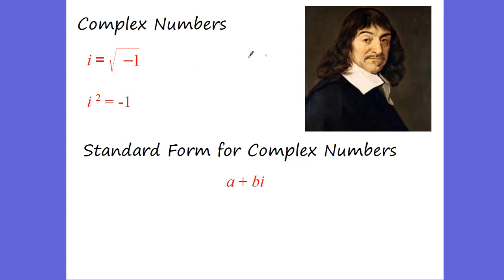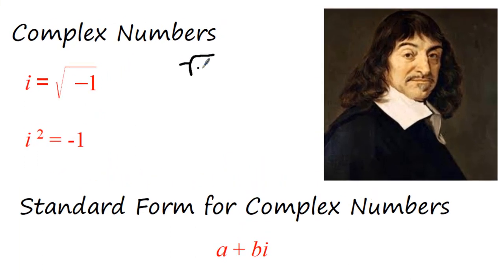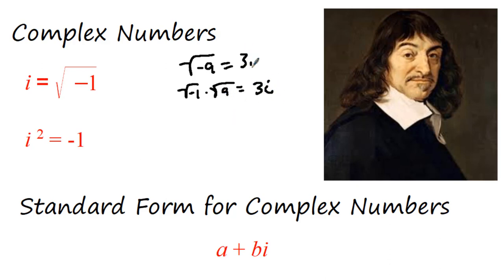There's Descartes right there — one good-looking guy. Everyone wanted his numbers, but they were a little too complex. So what we found is i, which we call the imaginary number. i is equal to the square root of negative 1. Which means if you have the square root of negative 9, that's really the square root of negative 1 times the square root of 9. Square root of negative 1 is called i, square root of 9 is 3. So it is 3i.